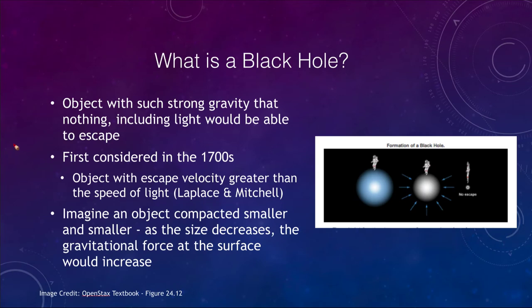What is a black hole? The definition of a black hole is an object with such a strong gravity that nothing, even light, can escape. Now anything has an escape velocity — there is an escape velocity from the Earth, from the Sun, from the solar system, from a galaxy, from a star, and from a black hole. What this means is that if you are traveling at a speed greater than that and there are no other forces involved, then you would be able to escape.